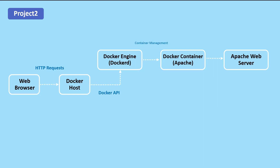The Docker container running the Apache web server is responsible for handling incoming HTTP requests and returning the appropriate responses. The Apache web server listens on a specific port for incoming requests, processes the request, and returns the response. Container networking is used to allow the Apache web server running in the Docker container to communicate with a web browser running on the host machine. The Docker engine manages the container networking, allowing the web server to receive incoming requests and send outgoing responses.